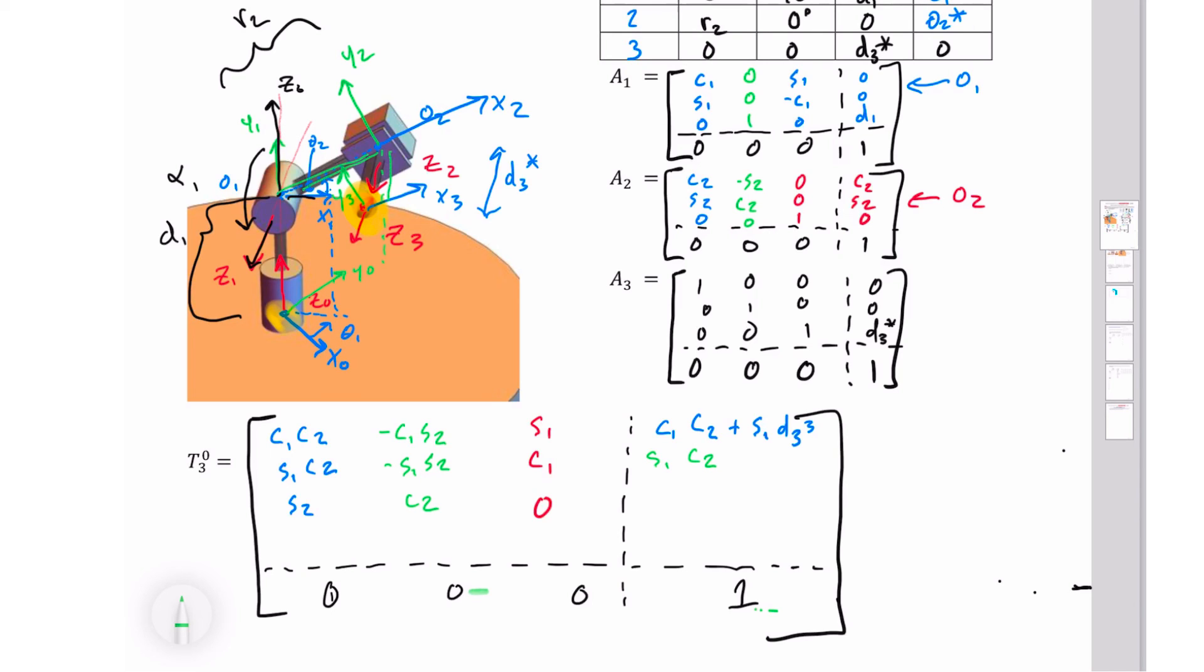And then we have our extent that we go out here, which is going to be a minus cosine 1 d3 star. Our final component is how tall is this point? How far is it in the z0 axis? We first have that we're stepping upwards by one unit to get to this point over here. And then our height is totally dependent on what theta 2 is. So that's going to be plus r2 sine of theta 2.